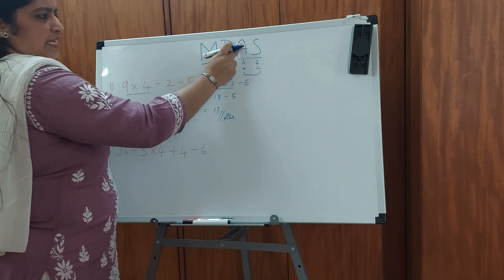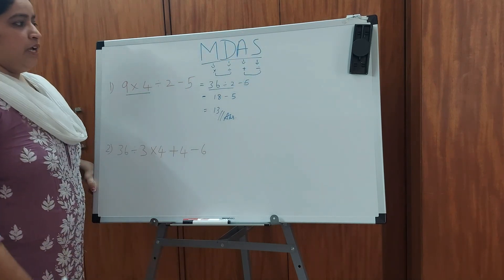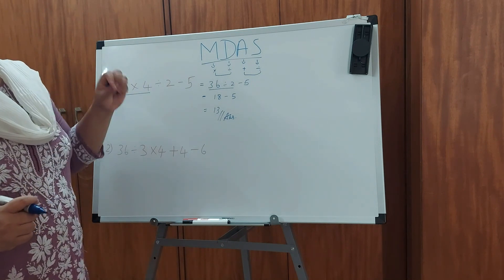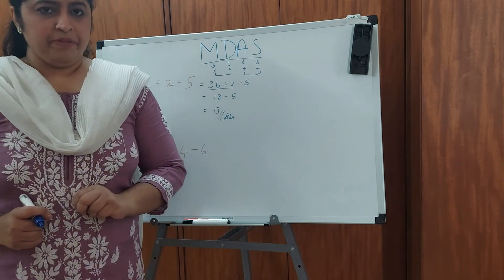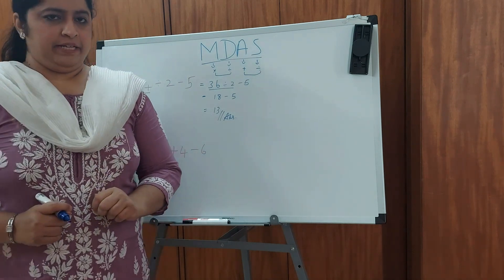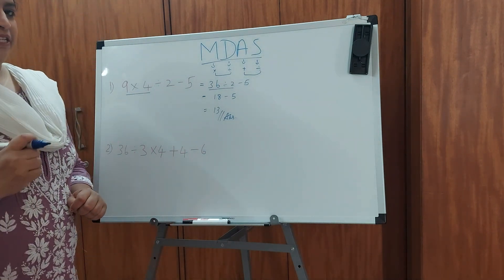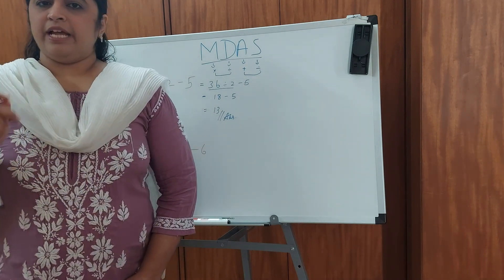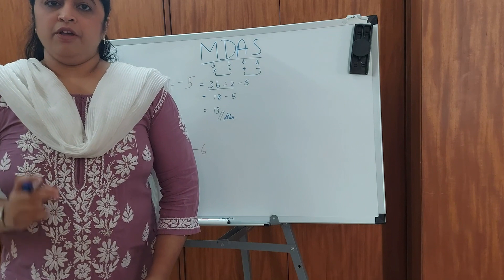That is multiplication first, division next, addition and then subtraction. I think this topic is pretty clear for you, how to apply this MDAS rule. If you found this video interesting, do not forget to click on the like button. And for more tips and tricks like this, do subscribe to my channel and click on the bell icon so that you get regular updates of all my videos.